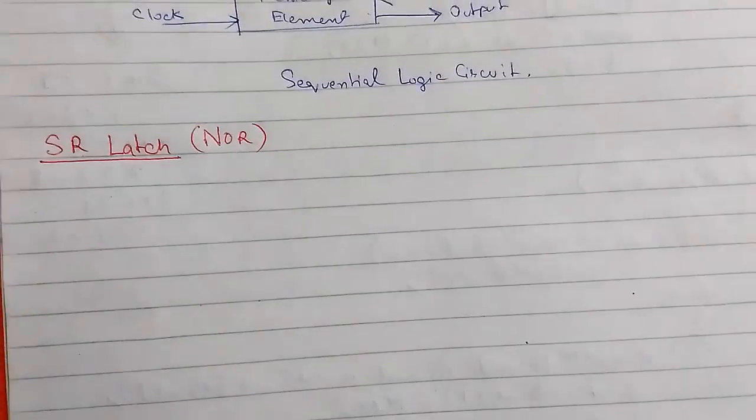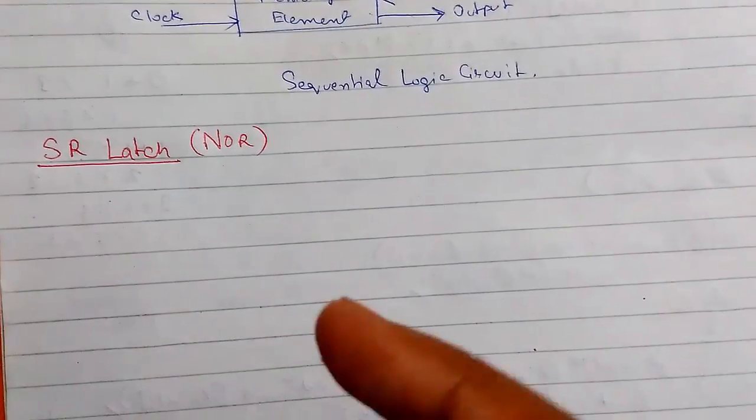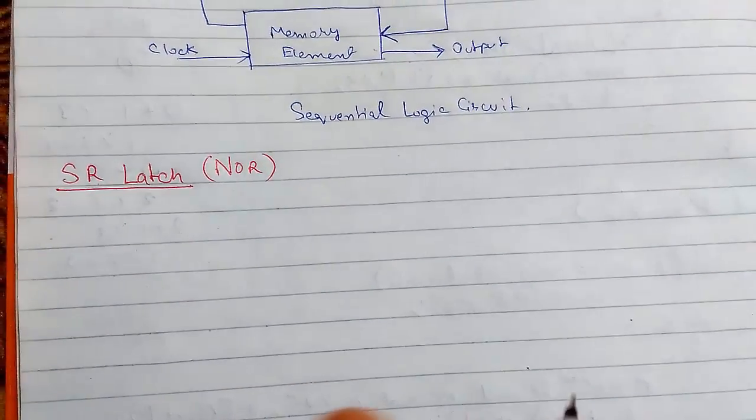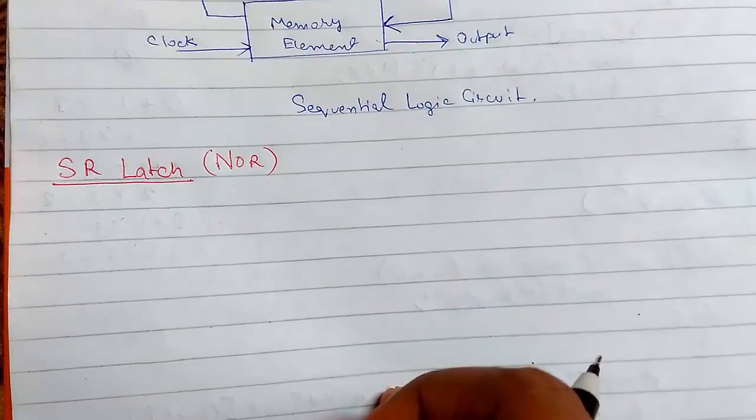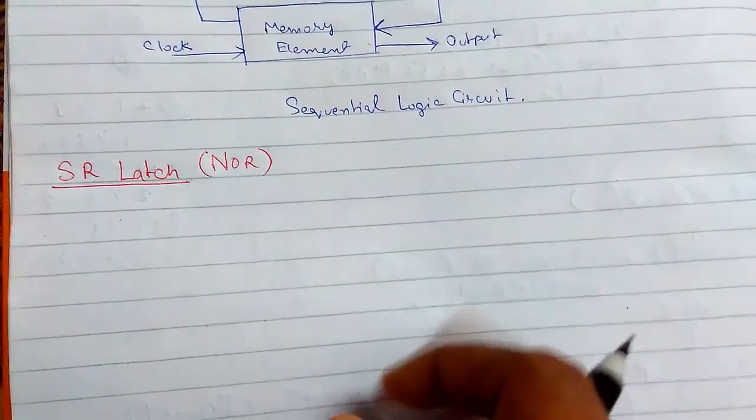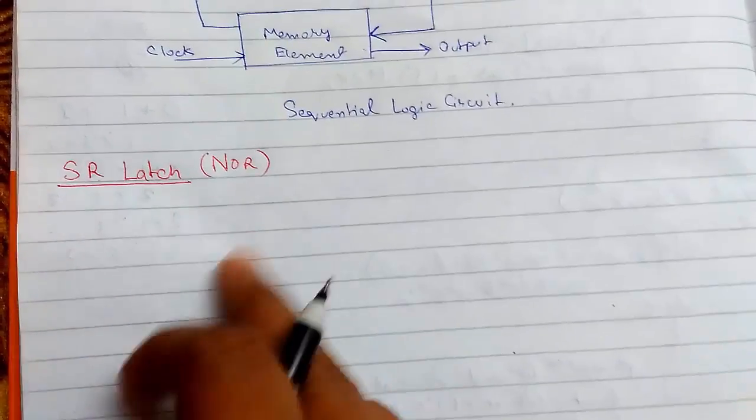There are two inputs that is S and R in an SR latch. The S stands for set, it means that when S will be 1, it will store 1. R stands for reset. So when R will be 1, then the flip flop will be reset and its output will be 0.